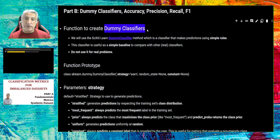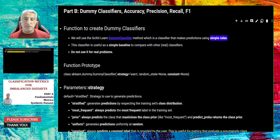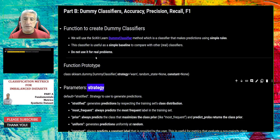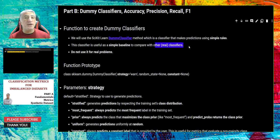How can we create dummy classifiers? We can use scikit-learn's dummy classifier method. A dummy classifier is a simple classifier that works on simple rules. Most of these dummy classifiers do not use the features in the dataset at all. They follow simple rules called strategies. Do not use dummy classifiers for real problems — they are used here just as a simple baseline to compare against meaningful, trainable classifiers.